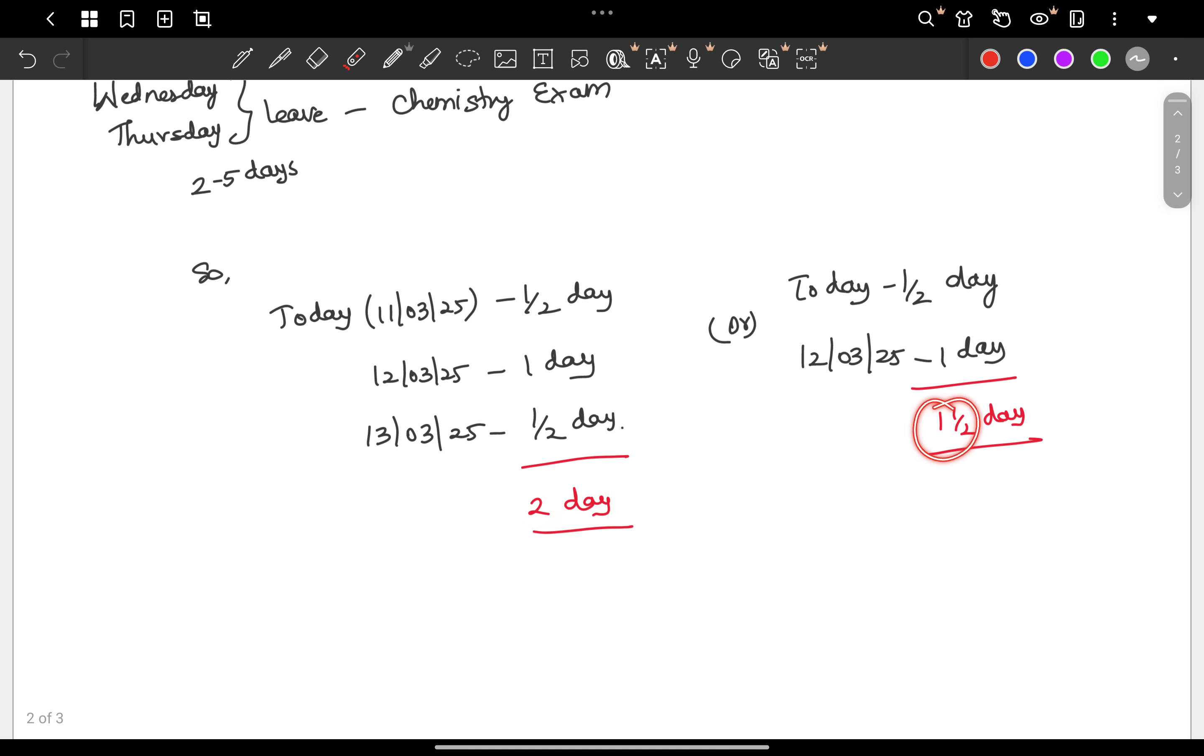What do you do? Now today is 11/3/2025 half a day. Now in this evening to night, then 12/3/2025, so full 1 day. Next 13/3/2025 half a day. So in total 2 days you have chemistry. If not, 1 and a half day you have chemistry.